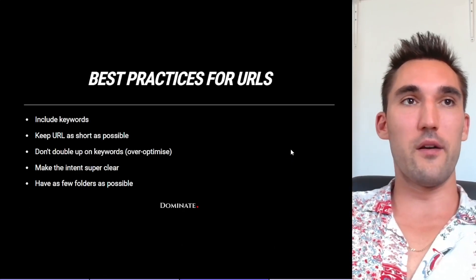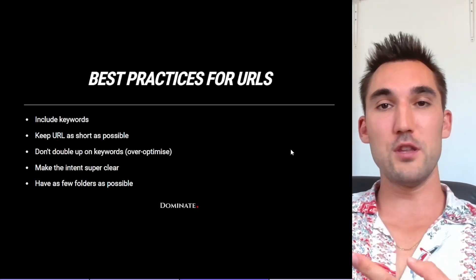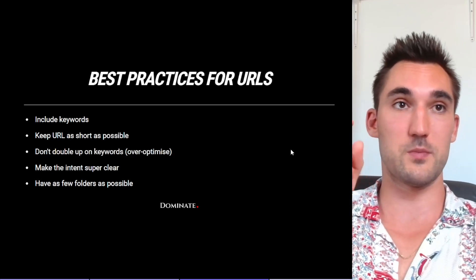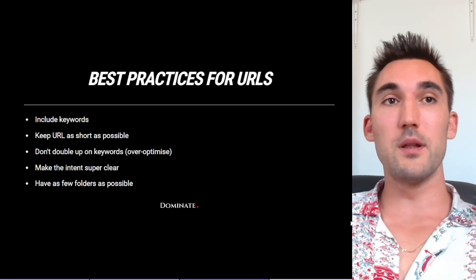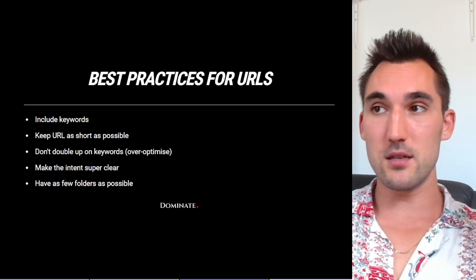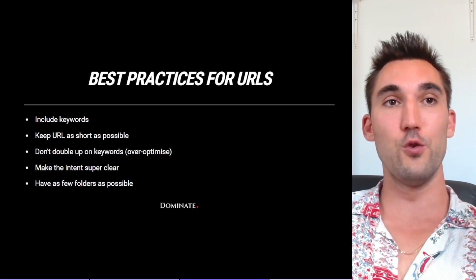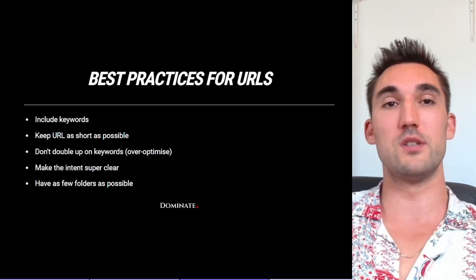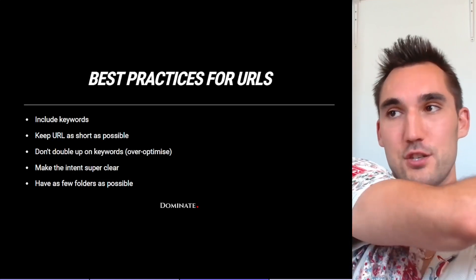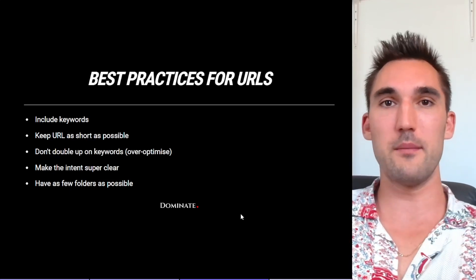A couple of best practices for URLs: you want to make sure that you include the keywords that you actually want to rank for. You want to keep the URL as short as possible — the whole URL as well as the slug of the specific page. You also don't want to double up on keywords, so you don't want to over-optimize the URL. You want to make the intent of the page super clear, and you also want to have as few folders as possible. By folders, I mean like slash something slash something else — each thing after the slash is considered a folder.